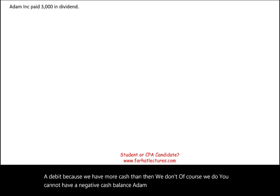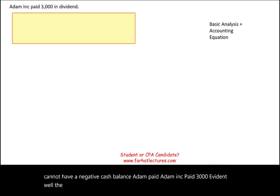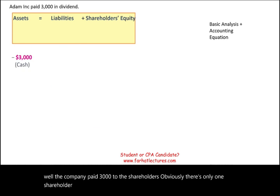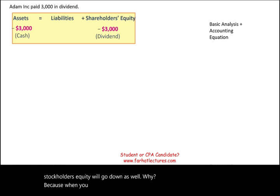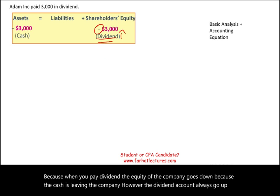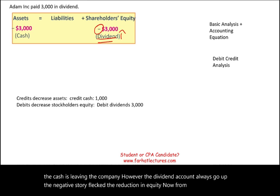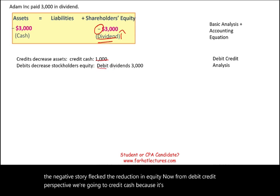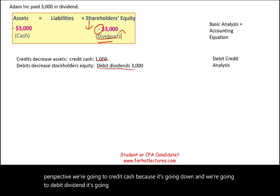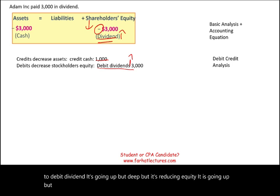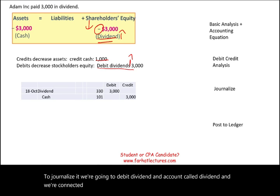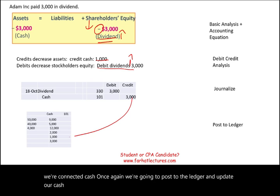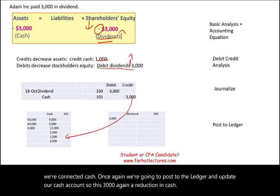Transaction 11: Adam Inc. paid $3,000 in dividends. Cash goes down; stockholders' equity goes down as well because when you pay dividends, the cash leaves the company. The dividend account always goes up, but the negative reflects the reduction in equity. We credit cash $3,000 and debit dividends $3,000. After posting, cash decreases and dividends has a balance of $3,000.